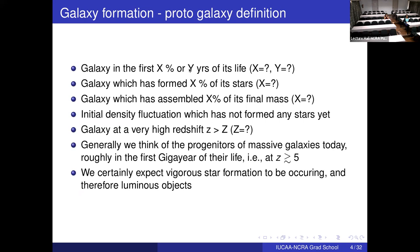Using the definition of a proto-galaxy as a galaxy in the first giga-year of its life, you need to look for progenitors at redshifts greater than 5, because at redshift 5 the age of the universe is approximately one giga-year. We expect vigorous star formation to be occurring and therefore luminous objects. Although proto-galaxies will be faint, if they are not star-forming they will be even fainter and undetectable. The Malmquist bias doesn't hamper you here because you know you're looking only for luminous objects.